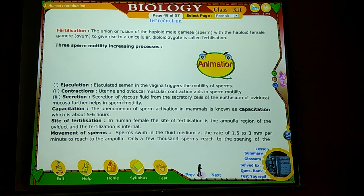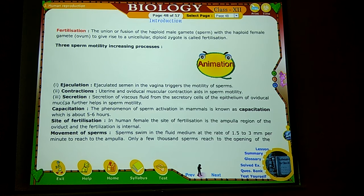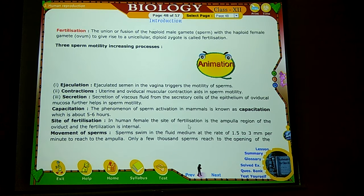Secretion — secretion of viscous fluid from the secretory cells of the epithelium of the oviductal mucosa aids in sperm motility. Then capacitation — the phenomenon of sperm activation in mammals is known as capacitation, which takes about 5 to 6 hours.